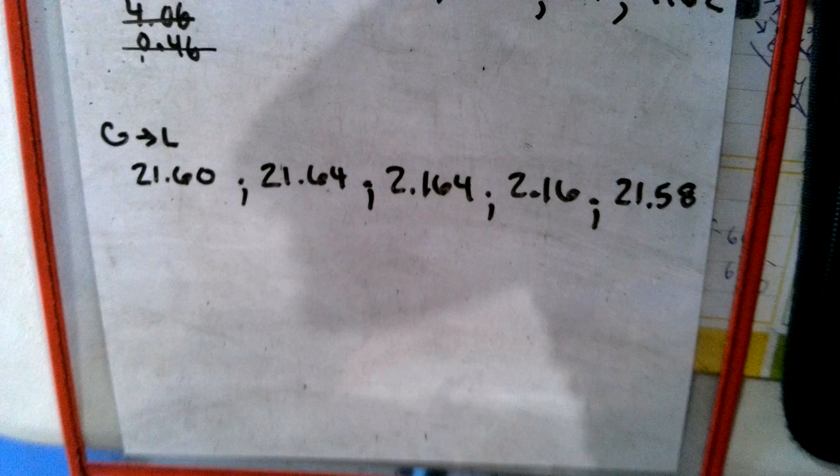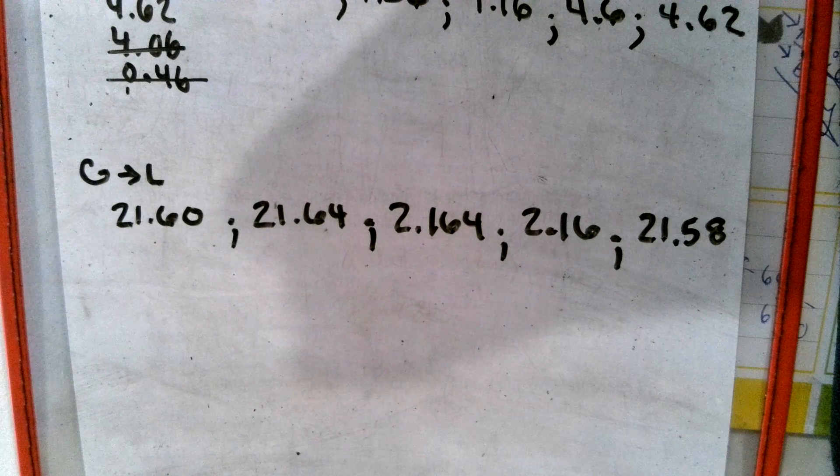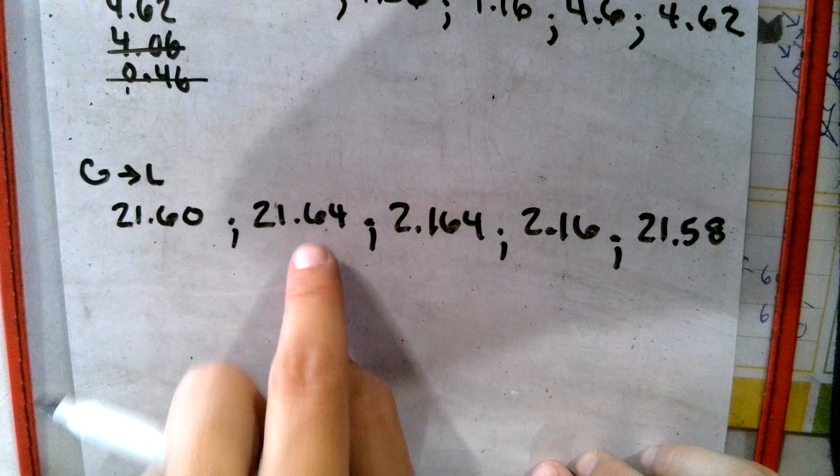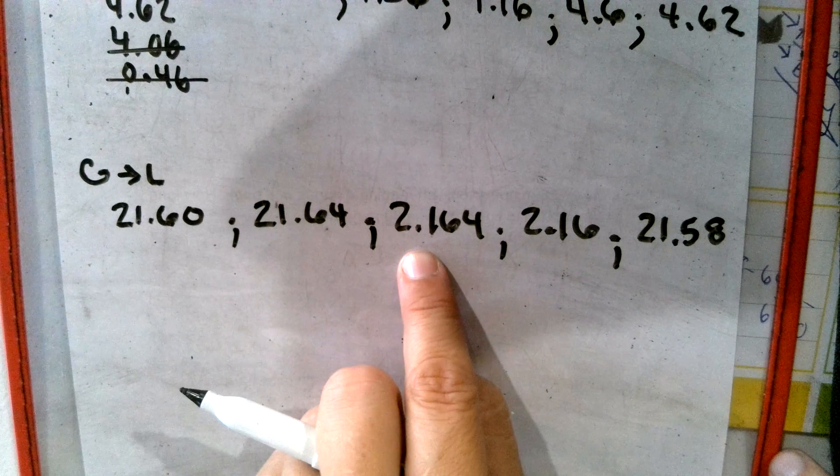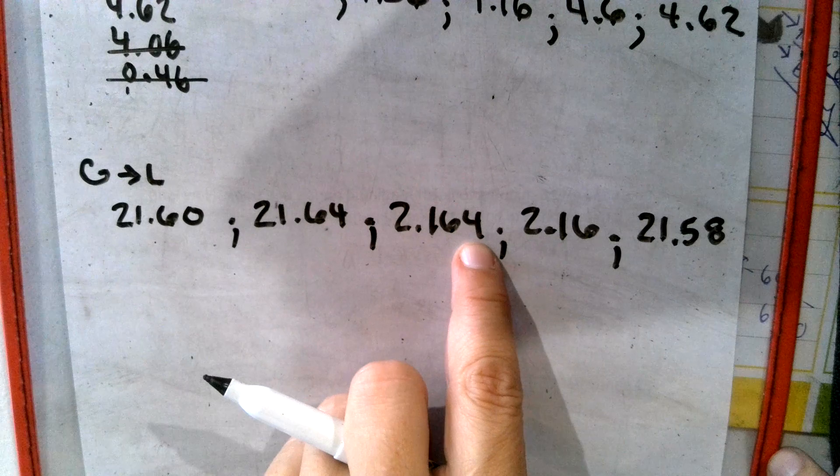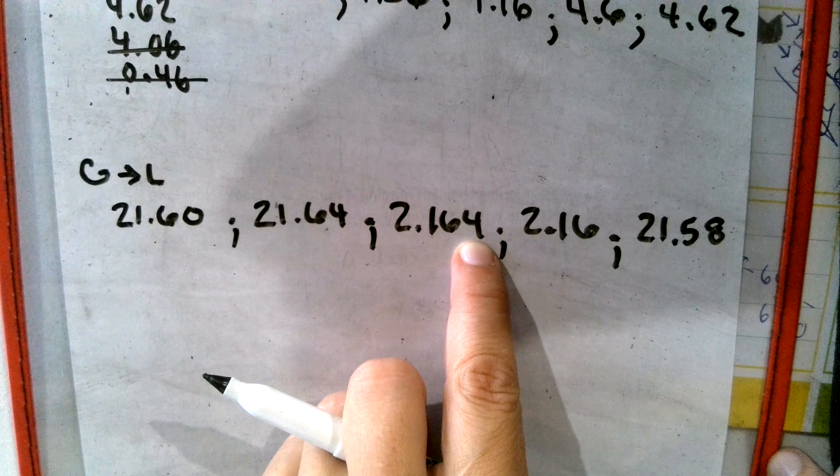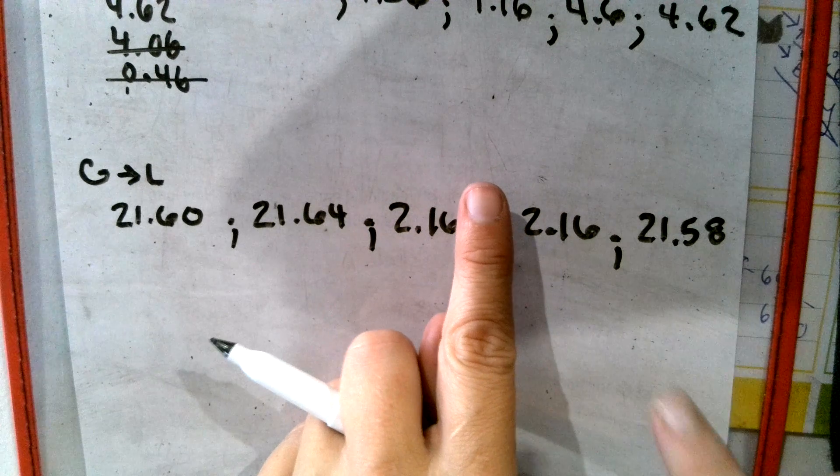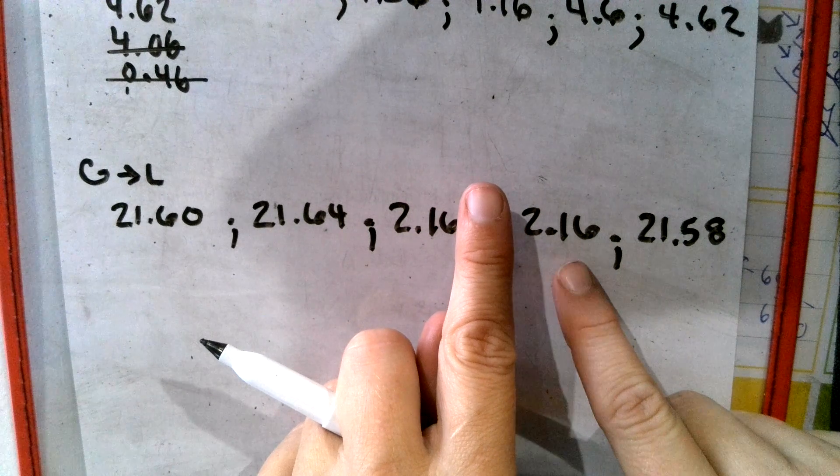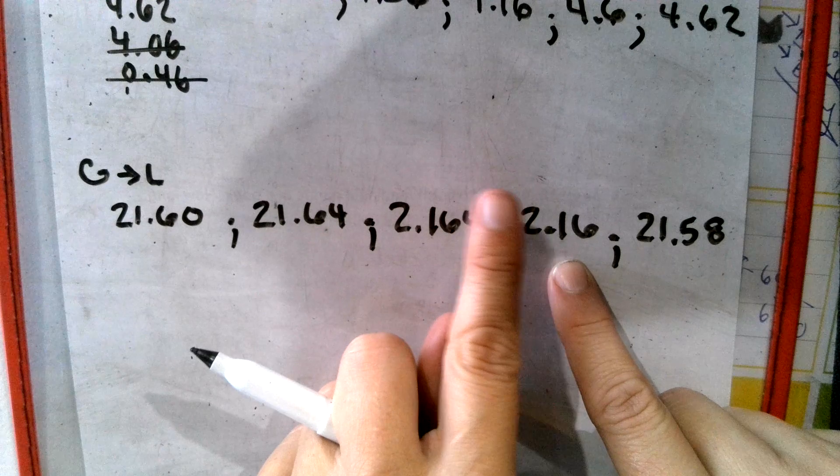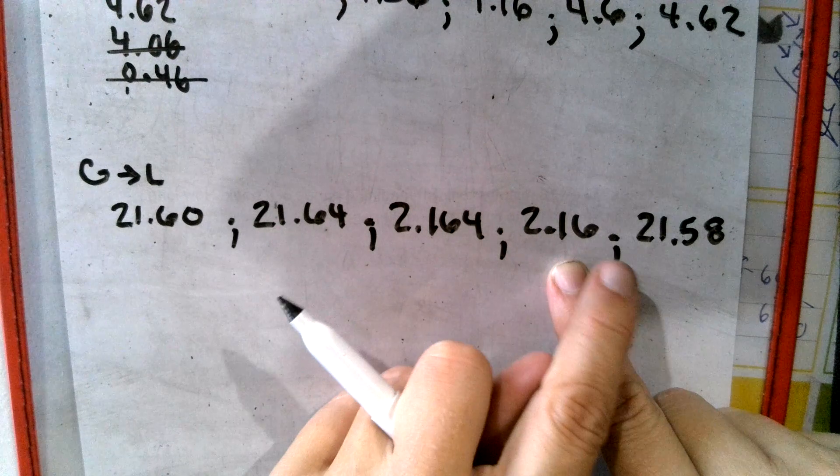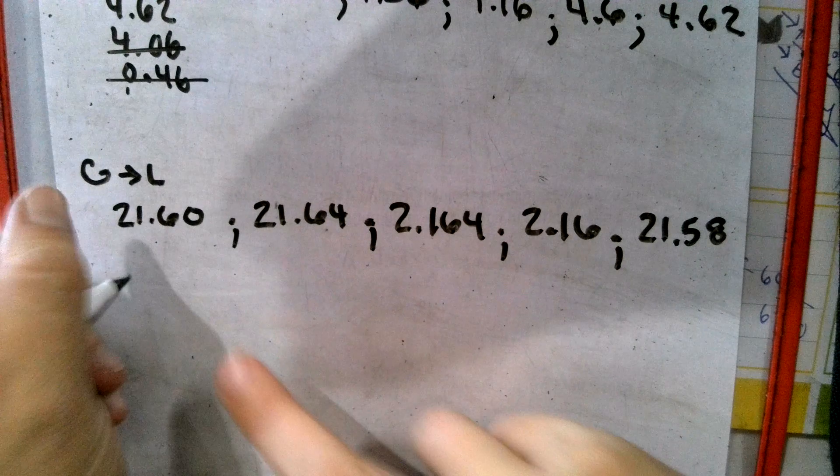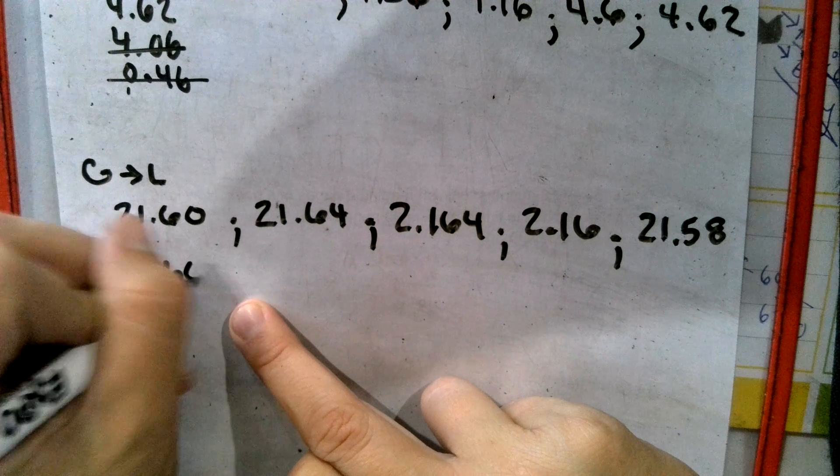So then if we're looking for greatest to least, we can think the same thing. We can think of money. $21.60, $21.64, $2.16. Even though there's a third digit, it's kind of a round-down number. So if you really look at it, it looks like money like that. But then look at the next one, $2.16. Well, this one's a little bit bigger because it's got an extra digit. That would be a zero there. And then $21.58. But we can line up our decimals like traditional method.